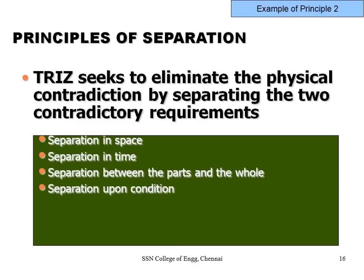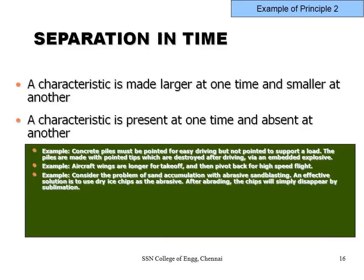We must understand the principle of separation, which eliminates physical contradictions. Landing gear is required and not required — so let it extend when landing and retract when flying. This is physical separation. You can separate contradictions in space, in time, between parts and the whole, or upon condition.